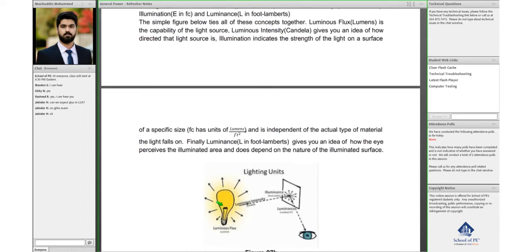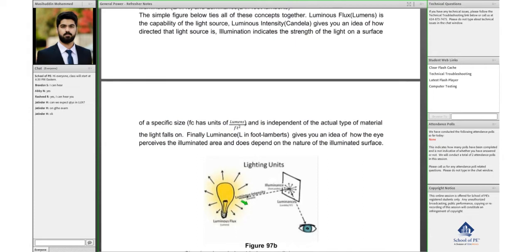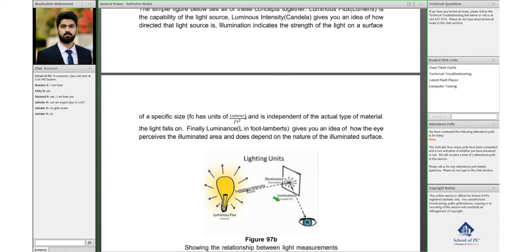How much potential this particular bulb can have. And then luminous intensity is the amount of light being directed towards the surface.